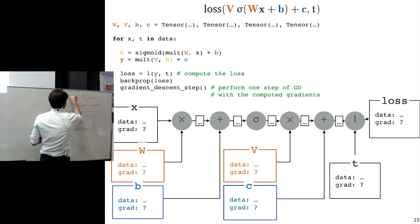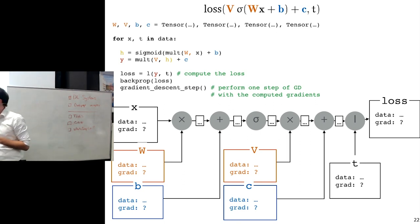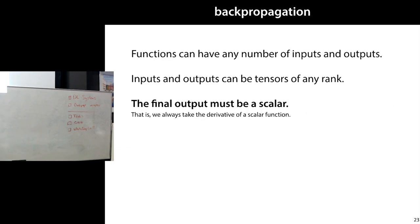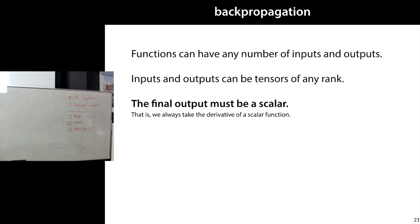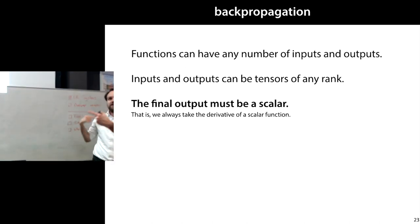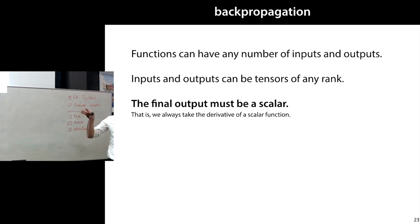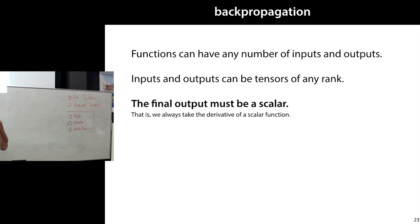Now we need to drill into this backpropagation. Functions can have any number of inputs and outputs, all of which must be tensors of any rank. There is one important constraint: in order for this to work efficiently, the final output of our computation graph — the thing with respect to which we take the derivative — has to be a scalar. Whatever we do, however complicated our neural network, at the end we have to get one single number.